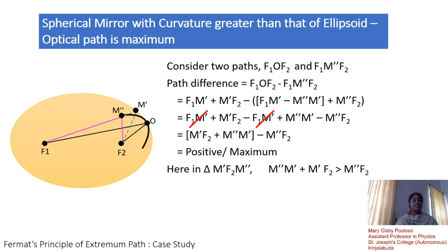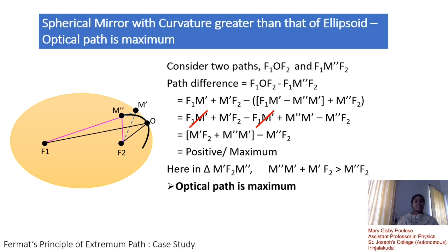We have taken into consideration the triangle m'-f2-m'', in which m''-m' plus m'-f2 is the base plus hypotenuse, which is always greater than m''-f2, the altitude of the triangle. Thus, we can state that the optical path in a spherical mirror with greater curvature than that of an ellipsoid is a maximum. Hope you have understood Fermat's principle of extremum path in all these cases. Thank you.